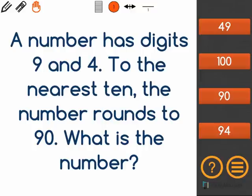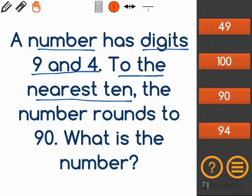First, ask yourself, what do I know? I know that a number has the digits 9 and 4. Then I know this number rounded to the nearest 10 rounds to 90. So I know that I'm going to have two digits.